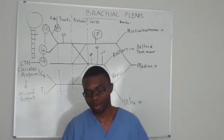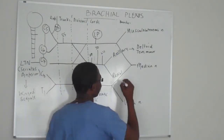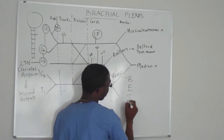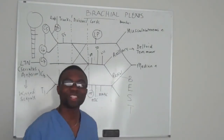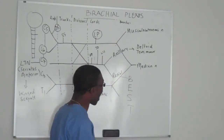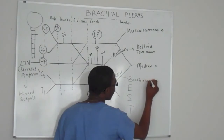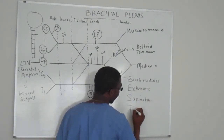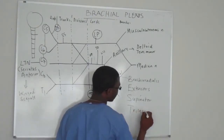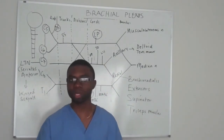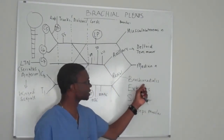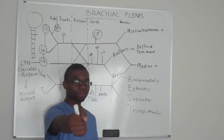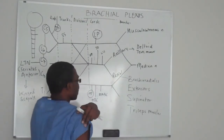Radial nerve. Now this one's the best — it is literally the best nerve. Why? Because it innervates the brachioradialis, it takes all the extensor muscles of your hands, your supinator, and your triceps muscle. It takes over the brachioradialis right over your arm, all the extensor muscles, your supinator, and your triceps muscle.